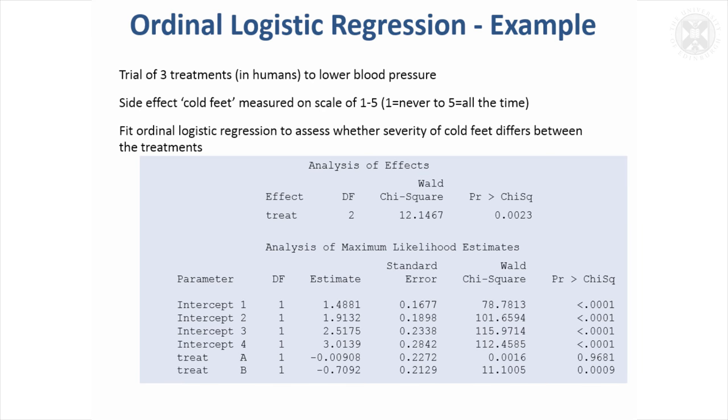Using SAS to fit an ordinal logistic regression model, the analysis table has four intercepts corresponding to the four partitions of five categories. We're not interested in these intercept values—they reflect increasing odds for higher categories. What we are interested in is the overall treatment effect. SAS assesses the overall effect of three treatments and gives us a significant p-value, showing cold feet differed significantly between treatments. We'd then want to find out which pairs of treatments differed.